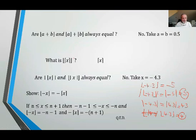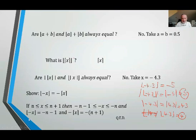To prove that the floor of negative x equals the negative ceiling of x, assume x is between n and n plus 1. Multiplying all parts by negative 1 reverses the inequalities: negative x is between negative n minus 1 and negative n. The floor of negative x is therefore negative n minus 1. The ceiling of x is n plus 1, so negative ceiling of x is negative n minus 1. These are equal — very straightforward.